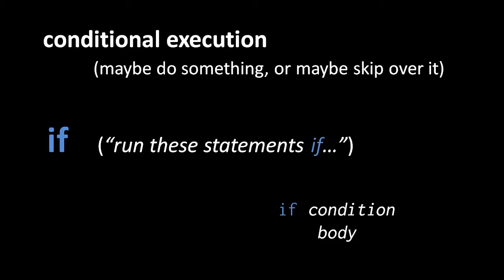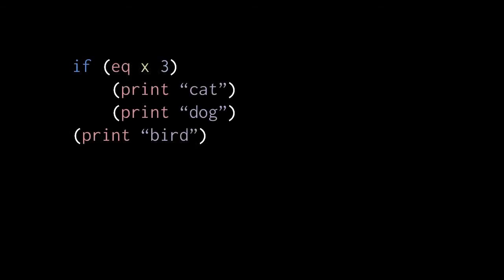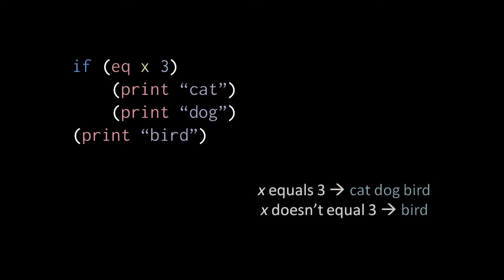So that's why it's called if — it has a sense of: if this condition is true, then do this stuff, otherwise skip over this stuff. Here in this example, we have an if where the condition is the expression eq x 3, and the body consists of two statements: the first printing cat, and the second printing dog. So when this code executes, if the equality operator returns true because x does equal three, then first the code will print cat, then it will print dog, and then execution continues on the line after the if — in this case a line that prints bird. If, on the other hand, x does not equal three, the equality operation will return false, and so the statements of the if body will get skipped over, so this code will just print bird.